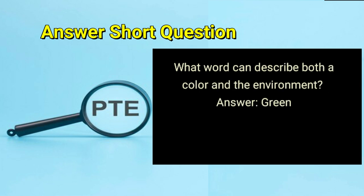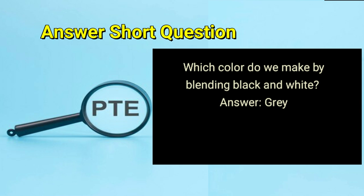What word can describe both a color and the environment? Answer: green. Which color do we make by blending black and white? Answer: gray.